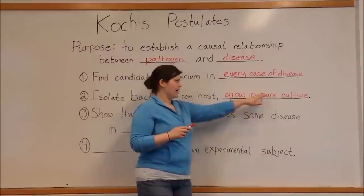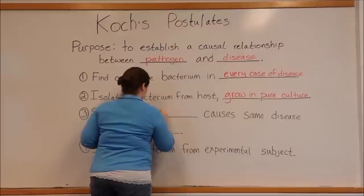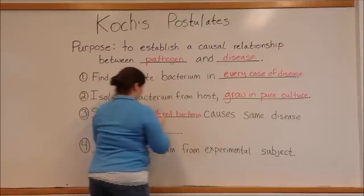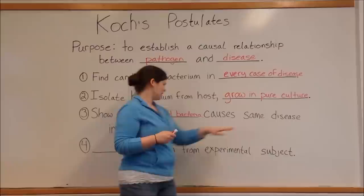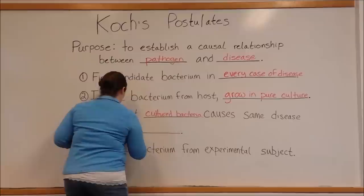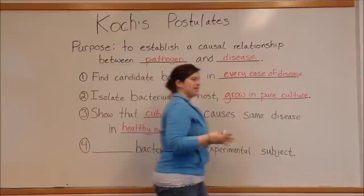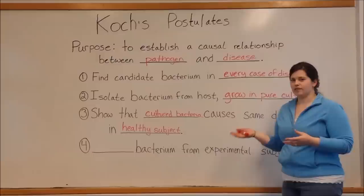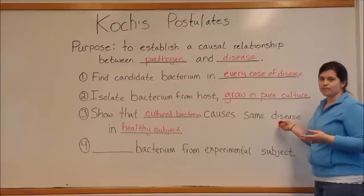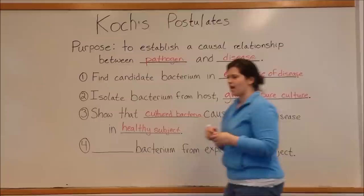Then, you have to show that the cultured bacteria from step two causes the same disease in a healthy host. This means taking the bacterium you are growing in pure culture and injecting it into a healthy subject — usually an animal model like a mouse — to see that it causes the same disease in that healthy subject once infected with this bacterium.